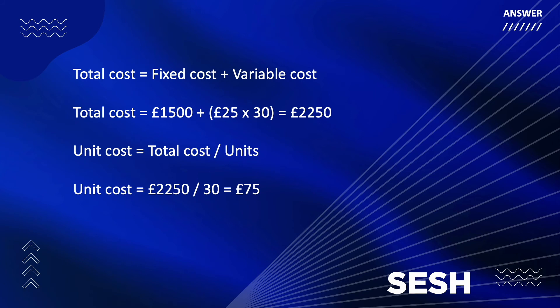Now you're able to calculate your unit cost. Your unit cost is your total cost just calculated, divided by the number of participants, which is 30, and that comes to £75. So the unit cost is £75 per participant.